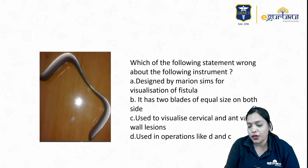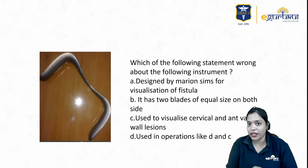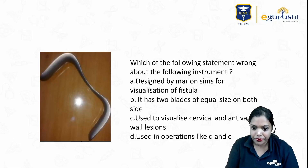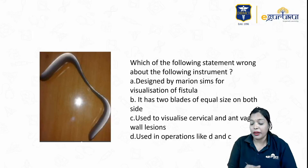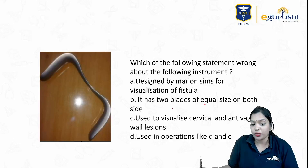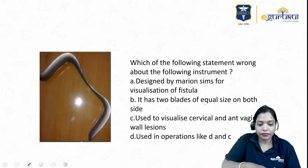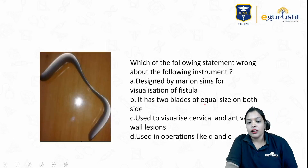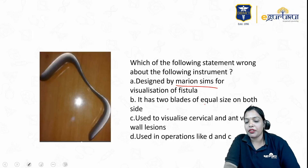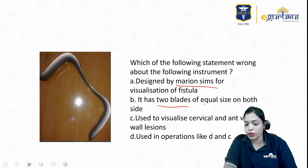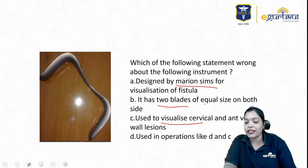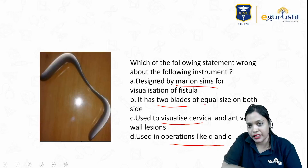So what is the instrument you're seeing here? I have an MCQ on that instrument. Which of the following statements is wrong about the following instrument? It is designed by Marion Sims for visualization of fistula. It has two blades of equal size on both sides. It is used to visualize cervical and anterior vaginal wall lesions. It is used in operations like D&C.